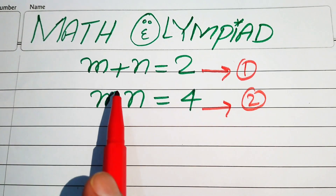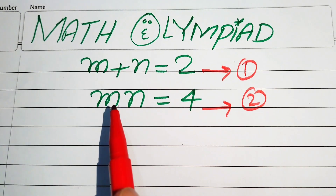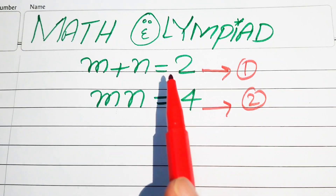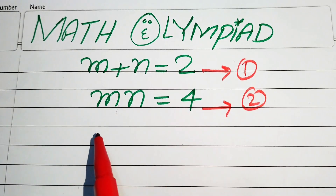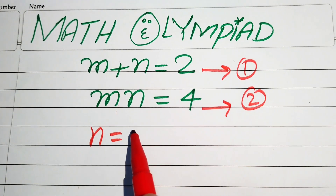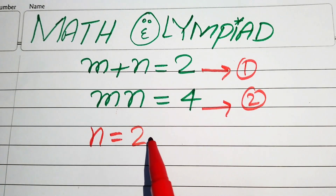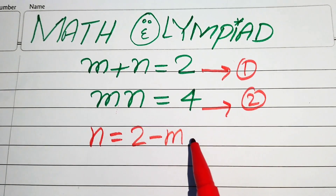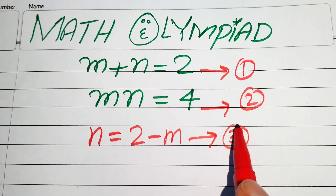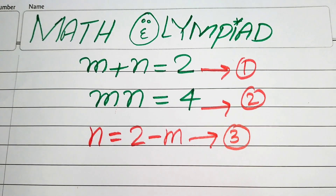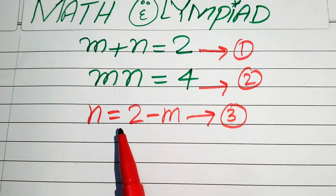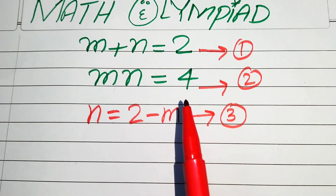First we focus on equation number 1. We move m to the right hand side and get n equals to 2 minus m. We call this equation number 3. In the next step we substitute this value of n into equation number 2.